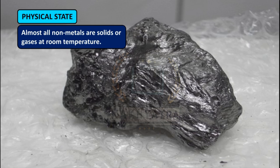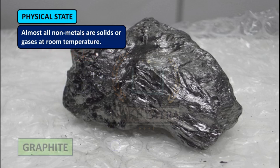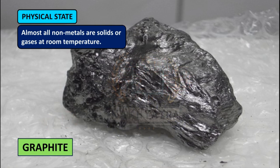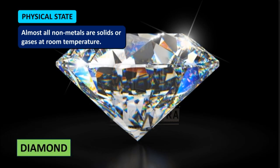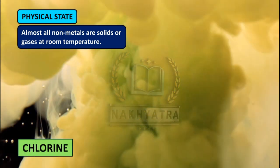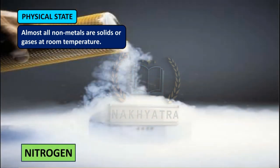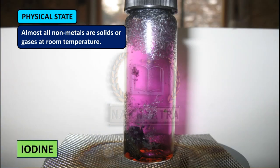Now let us see the physical state of non-metals. Almost all non-metals are solids or gases at room temperature. For example, graphite and diamond are non-metals which are solid at room temperature. Chlorine and nitrogen are gases. Iodine is a black non-metallic substance at room temperature and is crystalline in appearance.